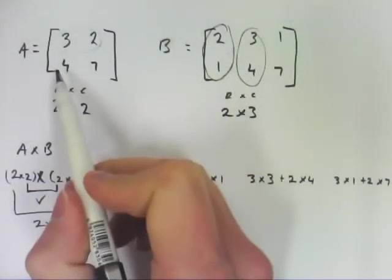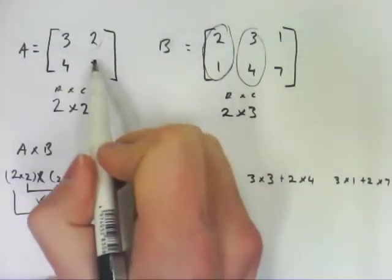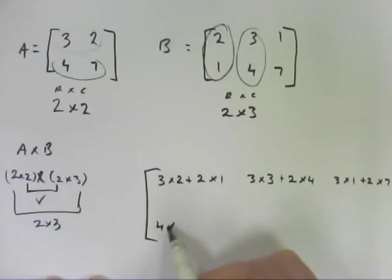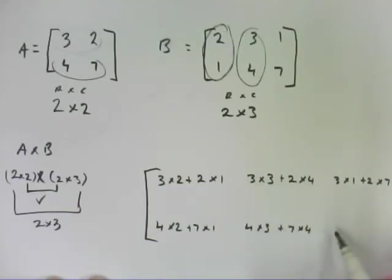To work out the bottom one, we do the work with the bottom row, and we go back through the columns. So we go 4 by 2 plus 7 by 1, 4 by 3 plus 7 by 4, and 4 by 1 plus 7 by 7.